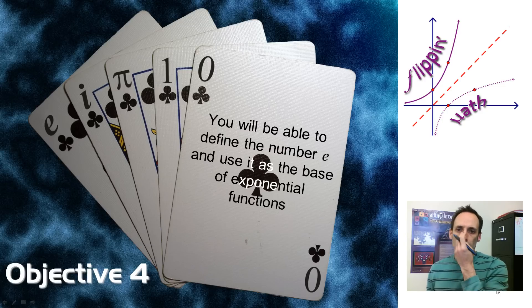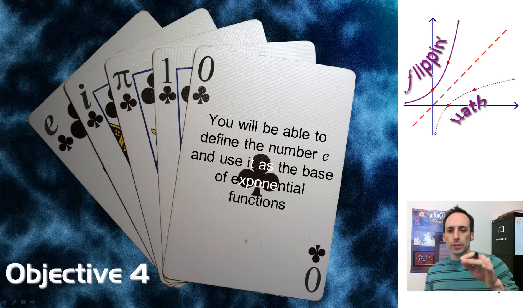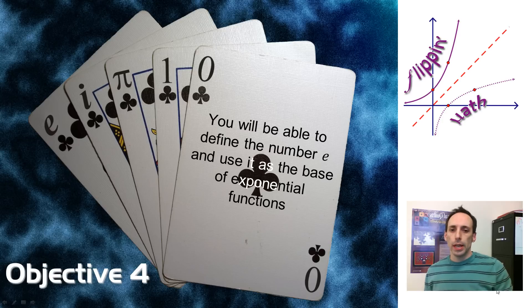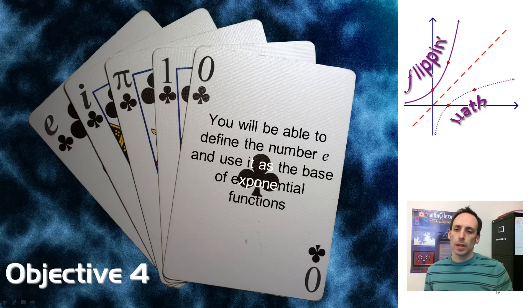So that's what this objective is about, being able to define this number, this E. It's an irrational number, and then use it as a base of exponential functions, graphing, and some finance stuff, exponential growth and decay, that kind of stuff.